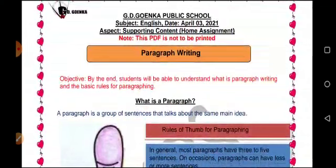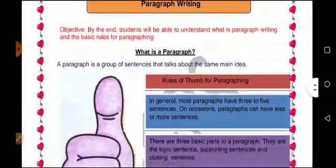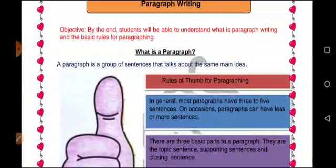Rules of thumb for paragraphing: You have certain rules when you form a paragraph that you should follow. First, in general, most paragraphs have three to five sentences. On occasions, paragraphs can have less or more sentences. Yes, a paragraph can have two or more sentences, or probably just three sentences, and you can also call that a paragraph.